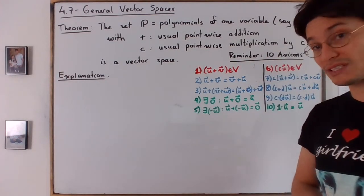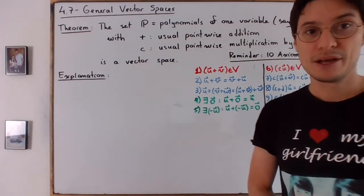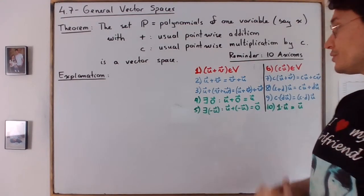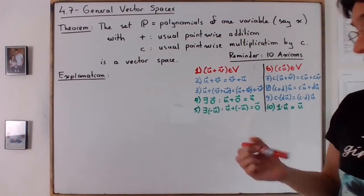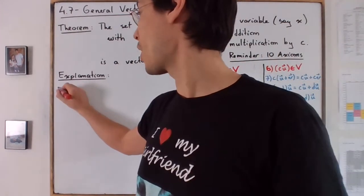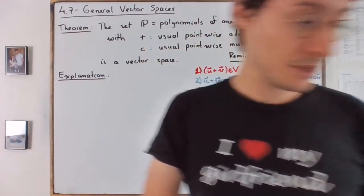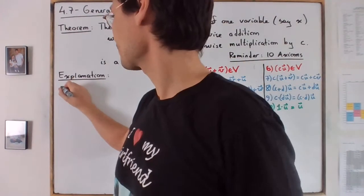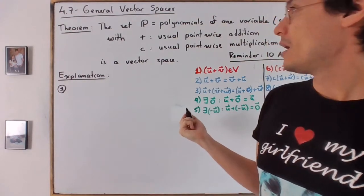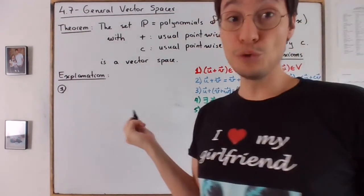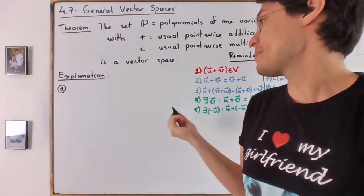Why is the set of polynomials a vector space? So the closure properties, let's have a look. So let's have one and two. Okay, verified. So step number one.